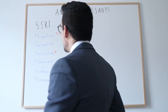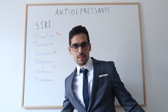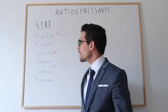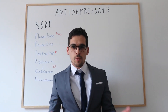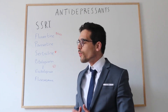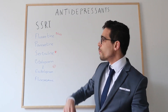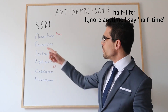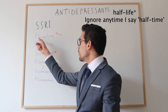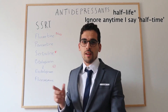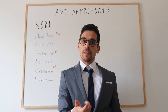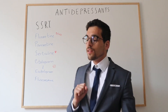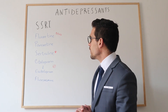Let's start with the SSRIs — the Selective Serotonin Reuptake Inhibitors. First up is fluoxetine, which is known to have the longest half-life. If you look at how it starts, it's 'flu' — and a flu normally lasts around one week, which is exactly the half-life of fluoxetine.